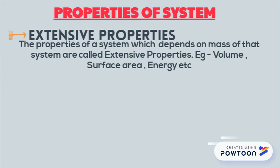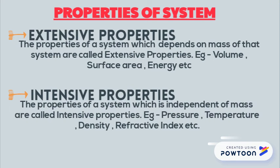Now we have system properties, which are divided into two parts. Number 1: Extensive properties — properties which are dependent on the mass of the system. For example, volume, surface area, and energy. Number 2: Intensive properties — properties that are not dependent on mass. For example, pressure, temperature, density, and refractive index.